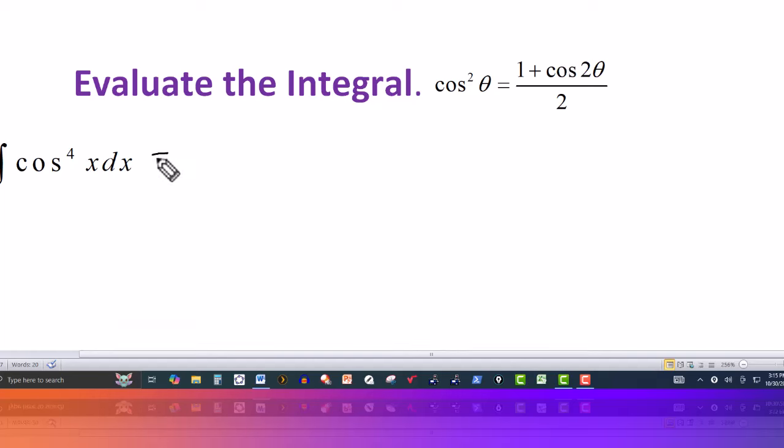So I'm going to rewrite this as cosine squared of x and then square it. That's the same thing. Cosine squared of x squared gives me cosine to the fourth. Now inside the parenthesis then I have cosine squared and that's where this formula comes into play. The angle here is x instead of theta but it's the same setup. So this is going to be the integral of, using this formula, one plus cosine of two x quantity squared.